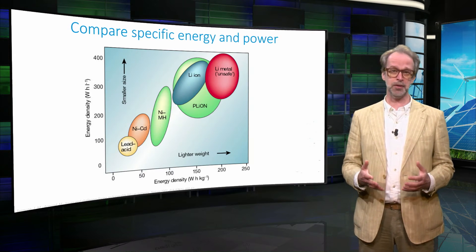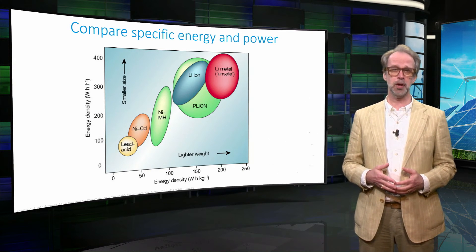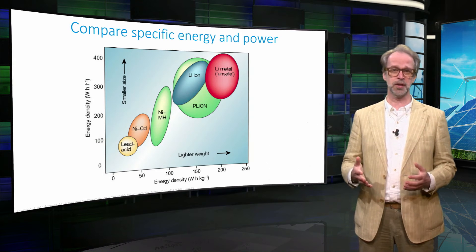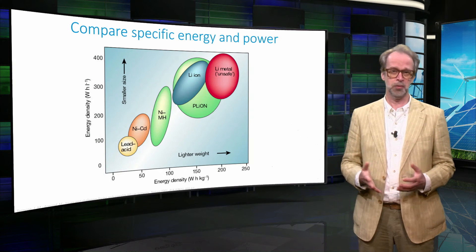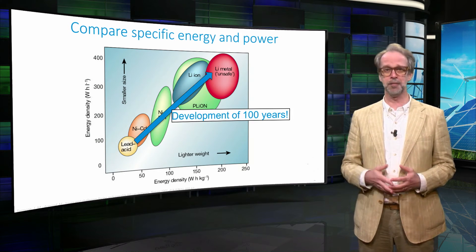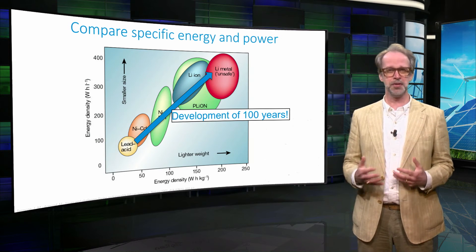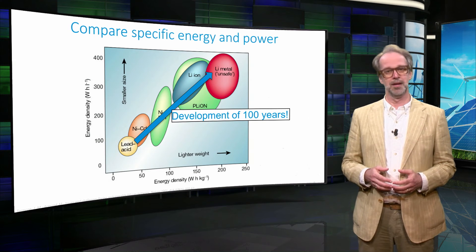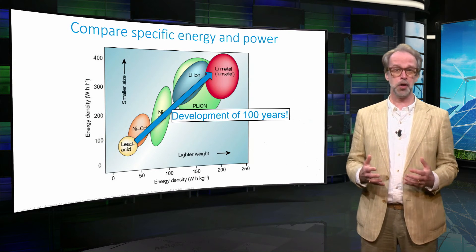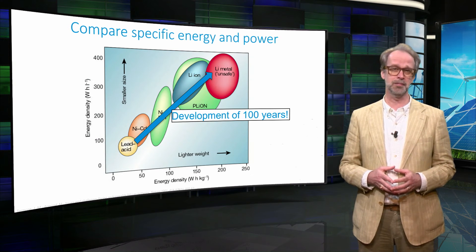Comparing the energy density of batteries in terms of volume or weight, we observe the improvement brought about by lithium-ion technology as compared to other technologies such as the familiar lead-acid battery used in almost all cars. However, this improvement has taken us 100 years, showing that it is not so simple to improve the energy densities of batteries. Note however that there is a large proportion of so-called dead volume and weight due to things like the encasing of the battery, so there is still hope for further improvement.